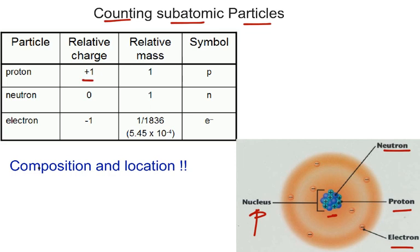The protons have a positive charge. Neutrons — from its name, neutral — have no charge. And electrons have a charge of minus one. Now, in terms of mass, electrons have an official mass, but for our purposes it's so small we call it zero — electrons have no mass. Protons and neutrons both have a mass of one, or one atomic mass unit. These are the symbols for the protons, neutrons, and electrons.